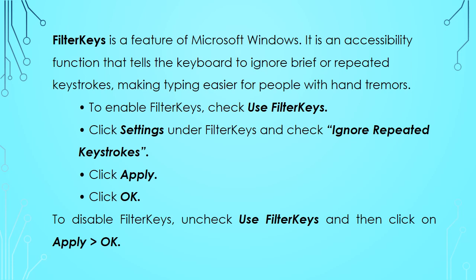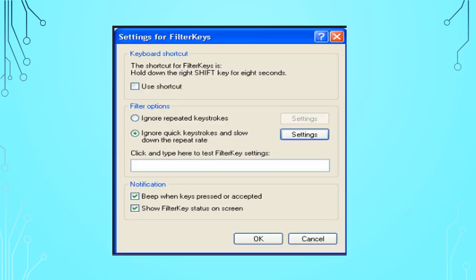Filter Keys is an accessibility function that tells the keyboard to ignore brief or repeated keystrokes, making typing easier for people with hand tremors. To enable Filter Keys, click on the 'Use Filter Keys' checkbox, then click Settings under Filter Keys and check 'Ignore repeated keystrokes', then click Apply and OK. This window appears when you click on Settings. Go to the Filter Options section to select the desired option. To disable Filter Keys, uncheck 'Use Filter Keys' and click Apply and OK.